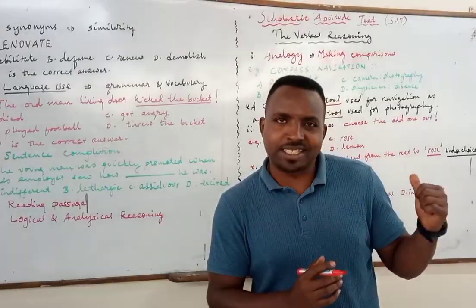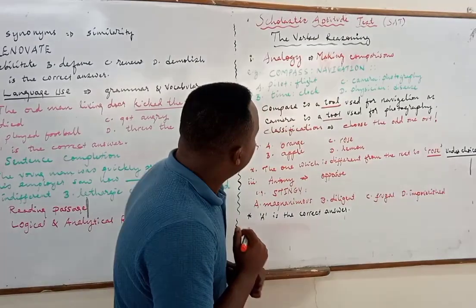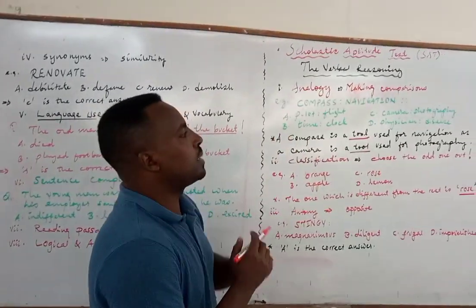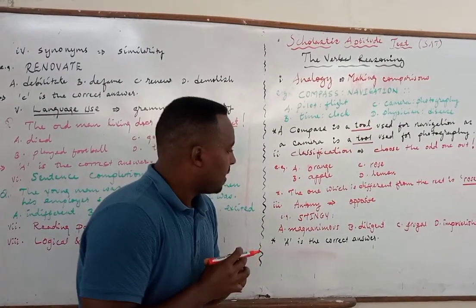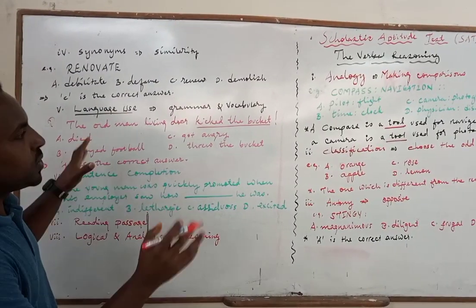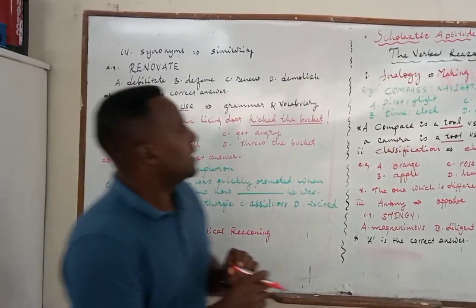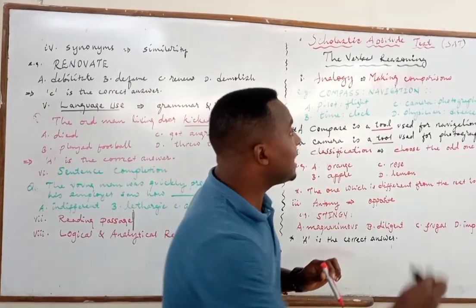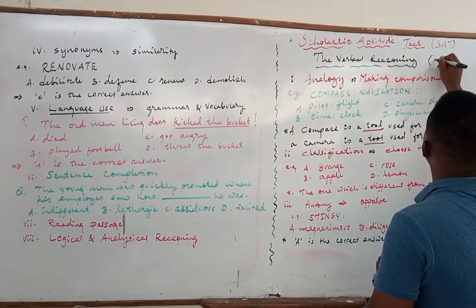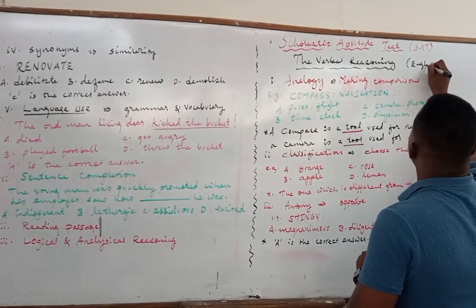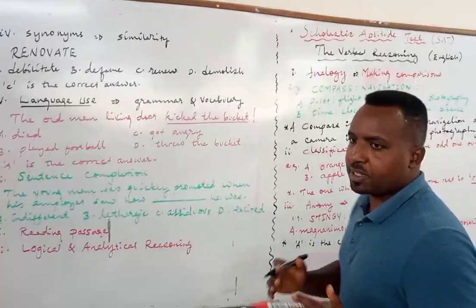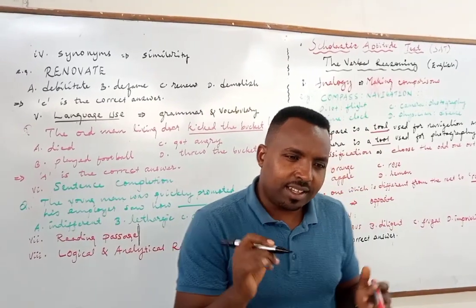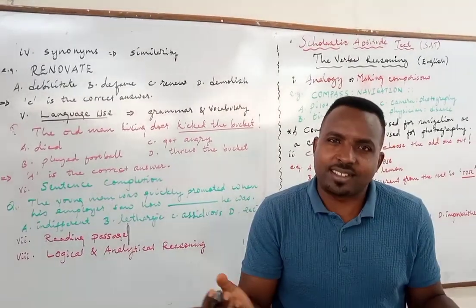Shall we go to the sections? Here I've got the sections and one example for each item. I'll try to show you how we can deal with it. The verbal reasoning section — the English section — is the English part. You are expected to be good at your reading, vocabulary, and some reasoning qualities.